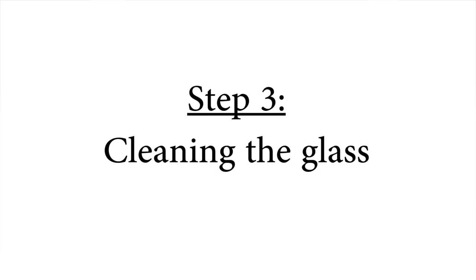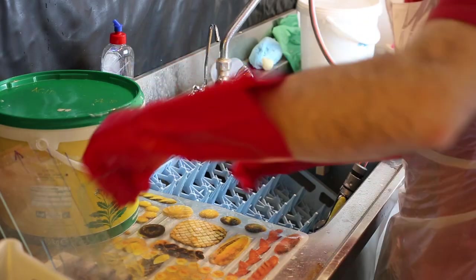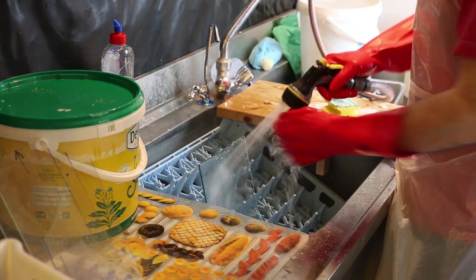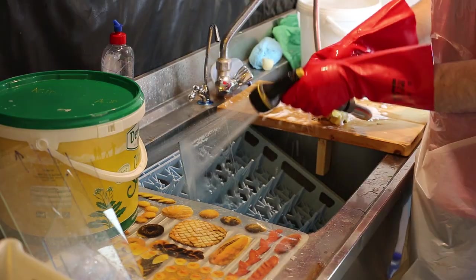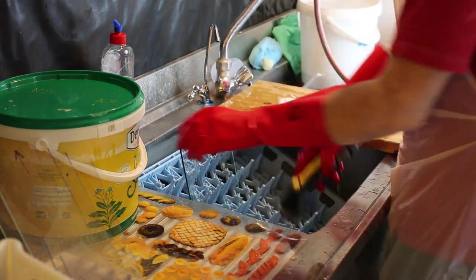Step 3 cleaning the glass. The glass should be cleaned very well. If any dirt remains on the glass you get an uneven coating later in the process. In the first stage of cleaning I use warm water and some window cleaner to get all the dirt and kerosene off.